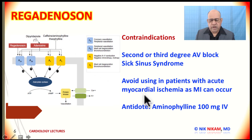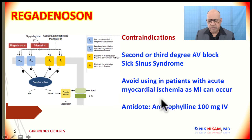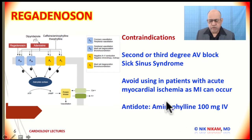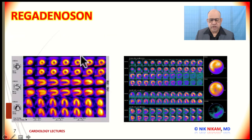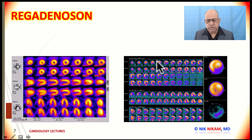One antidote to reverse the effects of regadenosine is aminophylline. Aminophylline should always be readily available when performing nuclear stress testing. It can be given as a 100 mg IV bolus if patients develop symptoms of ischemia or bronchospasm.